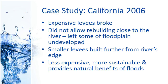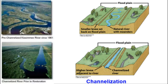Another case study is in California in 2006, where they're now looking at more sustainable development. It flooded, expensive levees broke, and they decided to try a different solution: instead of rebuilding close to the river, they left a lot of that natural floodplain undeveloped, allowing room for the river and using those areas for parks. Then they built smaller levees further away. The advantages are that it's less expensive, more sustainable because it allows the river that room, and it provides the natural benefits of flooding to the ecosystem.